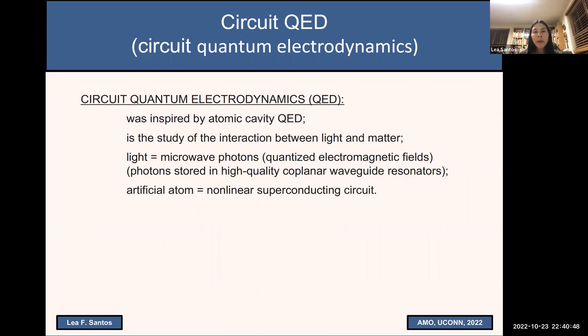Microwave photons, but more important than that, we are not going to be dealing with atoms. Instead, we are going to be dealing with circuits. Now these circuits, they represent atoms, is what people call artificial atoms. So let's have a look at some possible circuits.